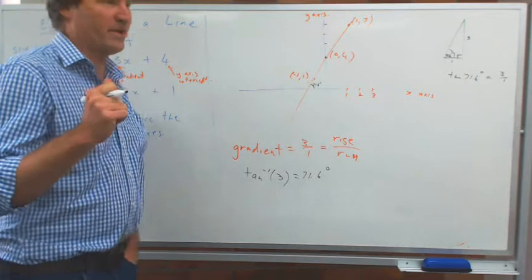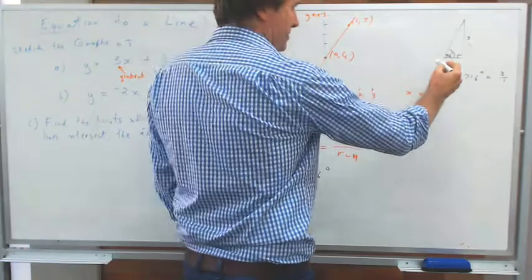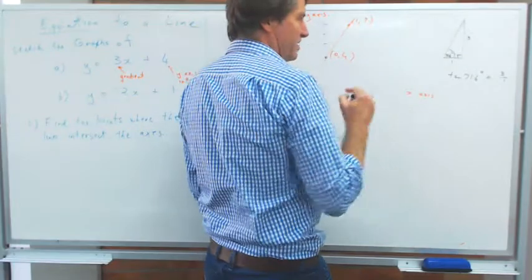So if we remember ourselves, if we want to remember the SOH CAH TOA rule, sin is opposite over hypotenuse, cos is adjacent over hypotenuse, tan is opposite over adjacent.